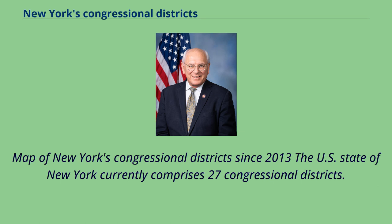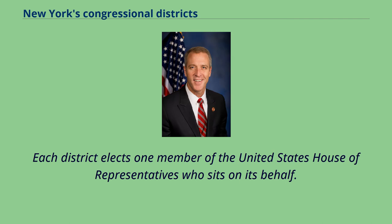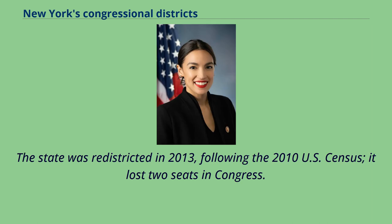Map of New York's Congressional Districts since 2013. The U.S. state of New York currently comprises 27 congressional districts. Each district elects one member of the United States House of Representatives who sits on its behalf. The state was redistricted in 2013 following the 2010 U.S. Census, and it lost two seats in Congress.